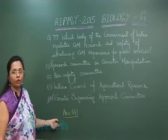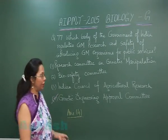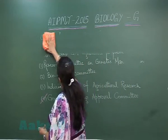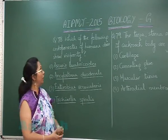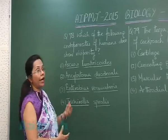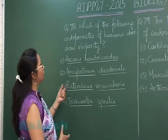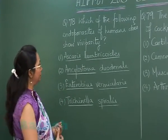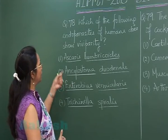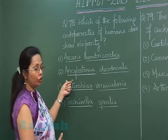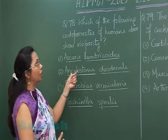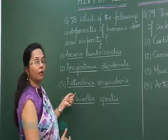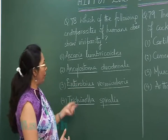Moving on to question 78: Which of the following endoparasites of humans shows viviparity? Out of the options — Ascaris, Ankylostoma, and Enterovias — these are all endoparasites and nematodes, but they are oviparous.